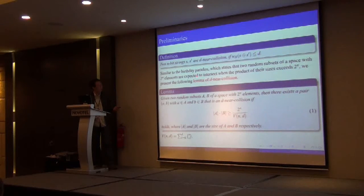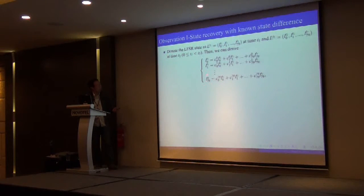And now we look at some preliminaries. We define two N-bit strings as a D-near collision if their XOR has a Hamming weight lower than or equal to D. Similar to the Birthday Paradox of Yuval, which states that two random sets of subsets of space with 2^N elements are expected to intersect when the product of their sizes exceeds 2^N, we present the formula for D-near collision. That is, given two random sets of subsets A and B of a space of 2^N elements, then there exists a pair (a,b) with a belongs to A and b belongs to B, that is D-near collision, if this equation is satisfied here. B_N,D is the total number of internal state differences with Hamming weight lower than or equal to D.